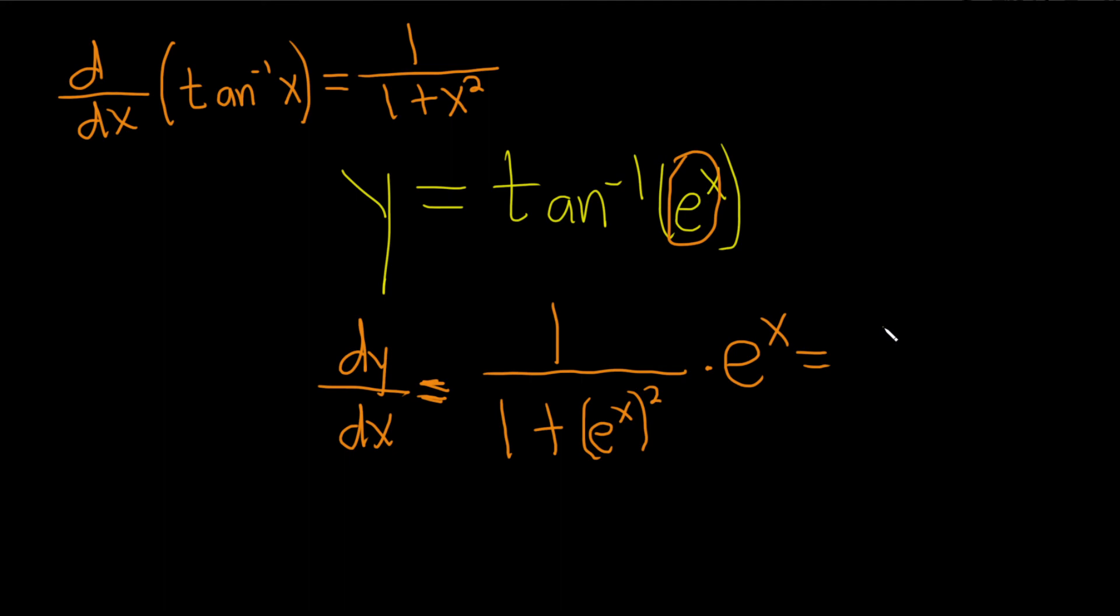We end up with e to the x over 1 plus, then you can multiply these using properties of exponents. That gives you e to the 2x. And that would be the final answer.